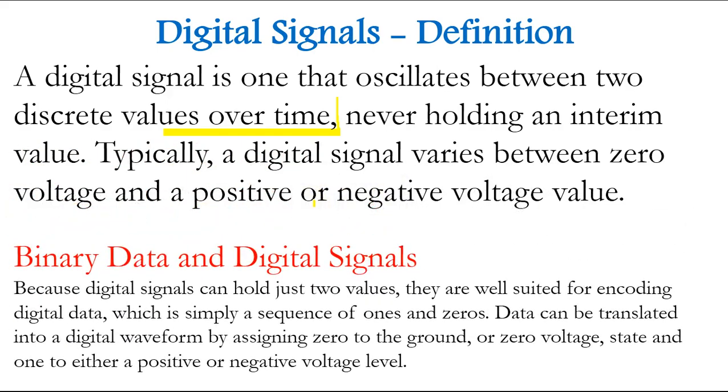If we talk about binary data and digital signals, because digital signals can hold just two values, they are well suited for encoding digital data, which is simply a sequence of ones or zeros. Data can be translated into a digital waveform by assigning zero to the ground or zero voltage state and one to either a positive or negative voltage.